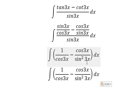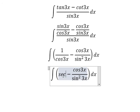Now, about 1 over cosine 3x, that is secant 3x.